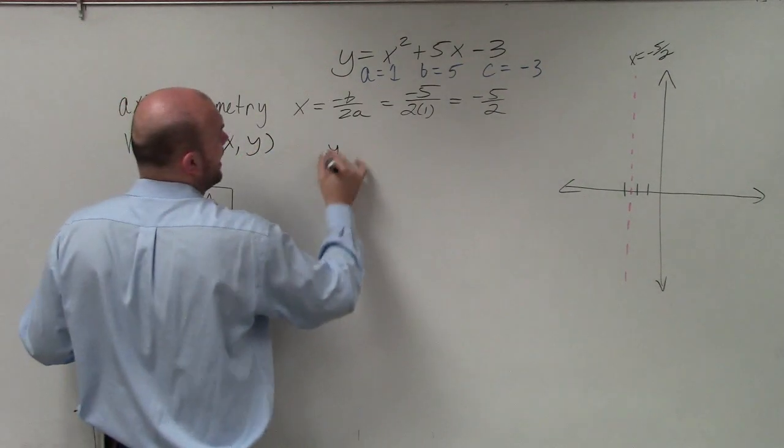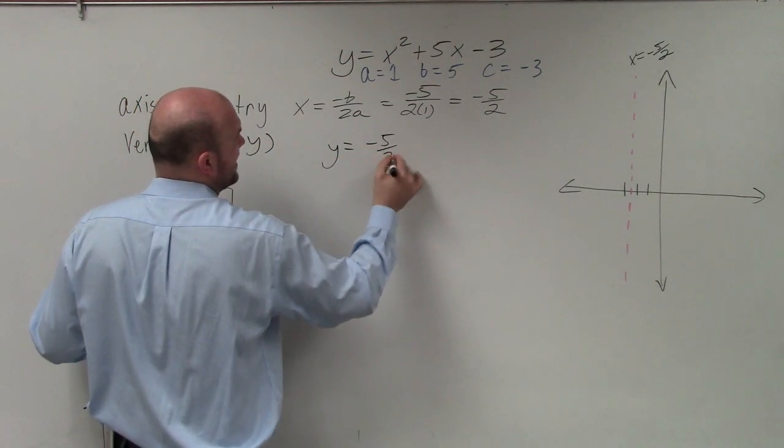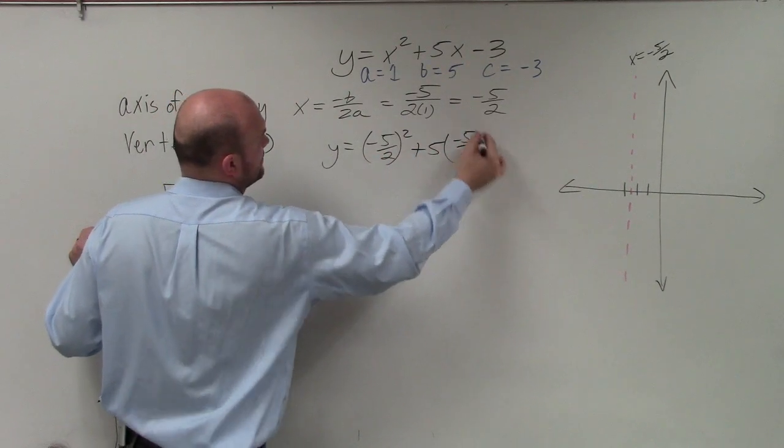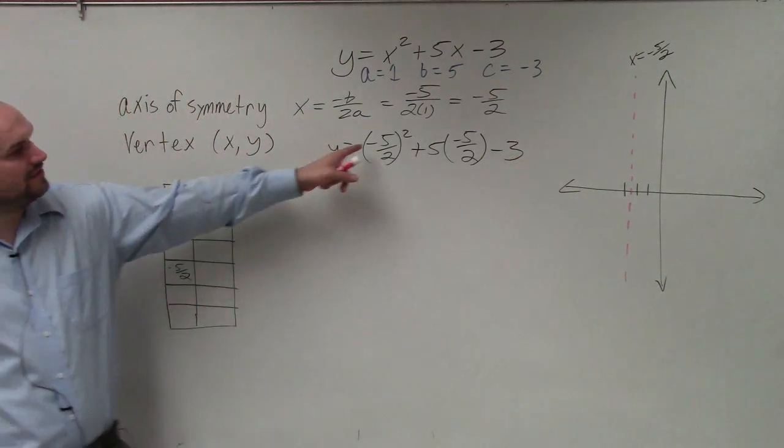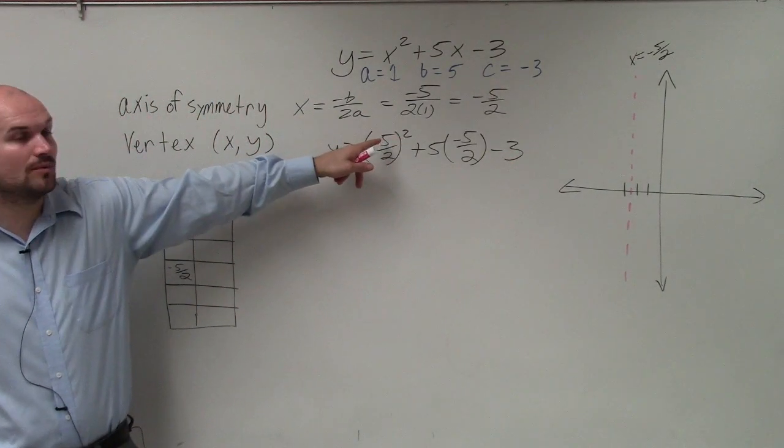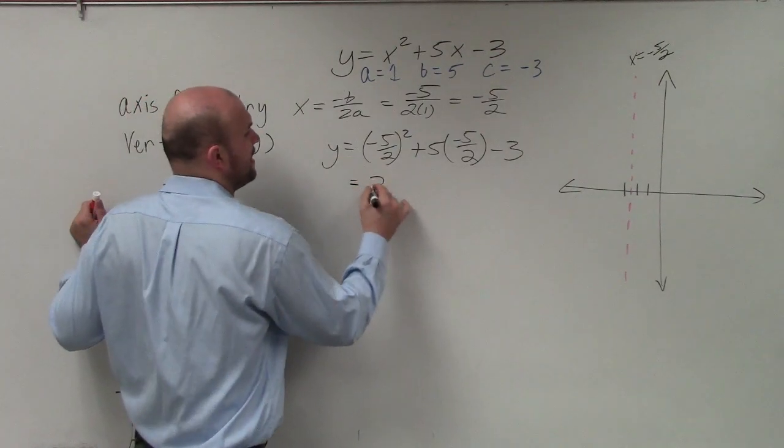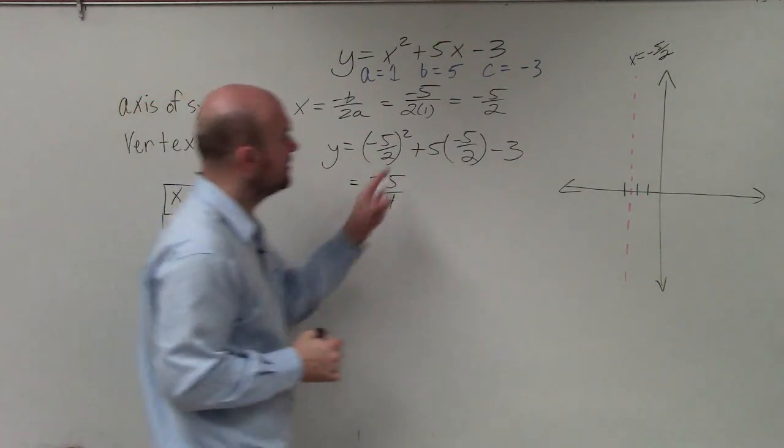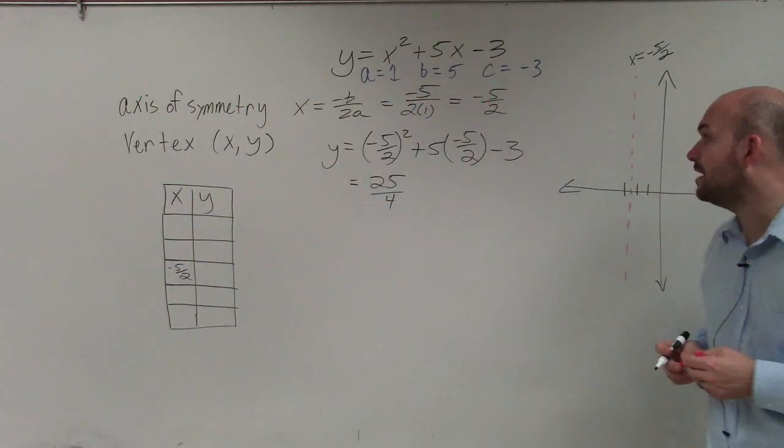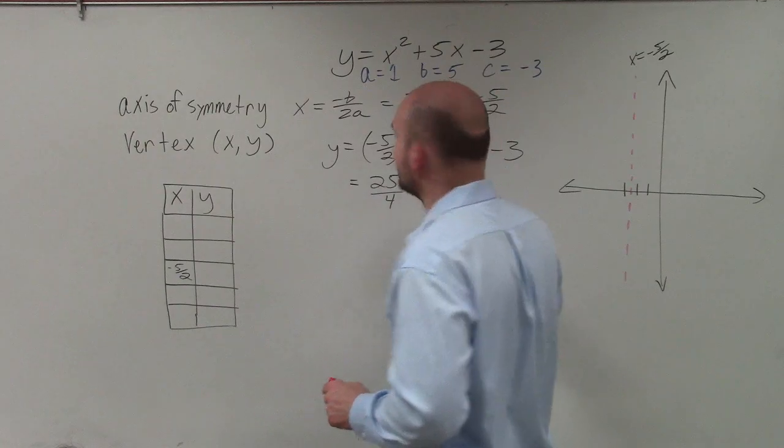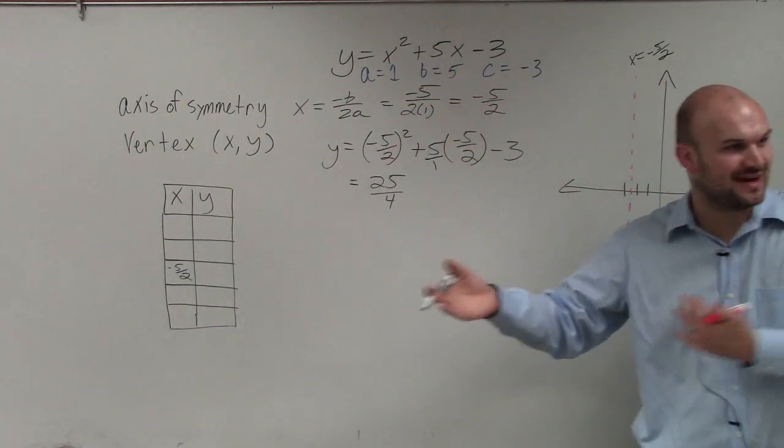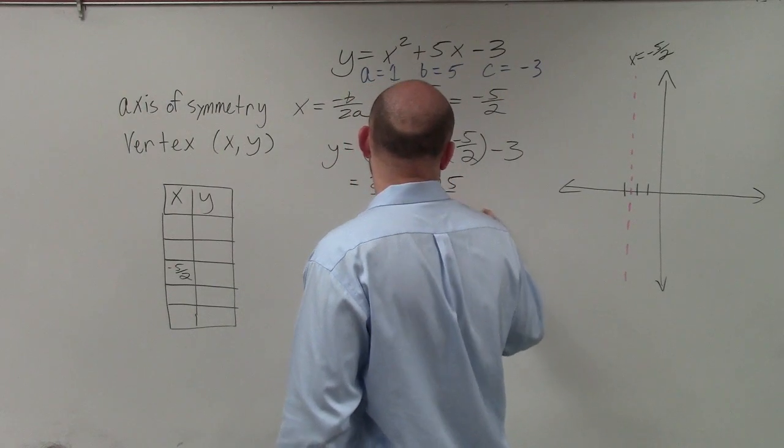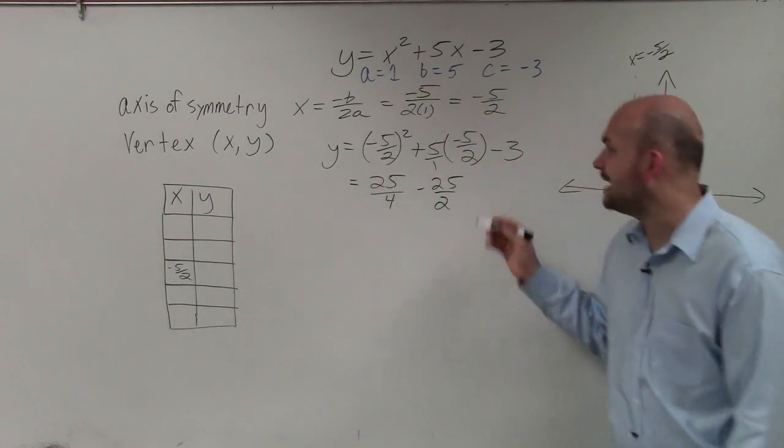So I'm simply going to take y equals negative 5 halves squared plus 5 times negative 5 halves minus 3. Well, negative 5 halves squared is going to equal positive 25 over 4. You square the top and you square the bottom. 5 times negative 5 halves, remember, you just multiply across. So that would be a negative 25 halves. And then I have minus 3.